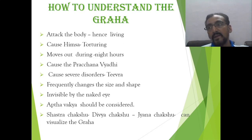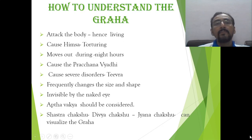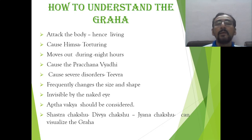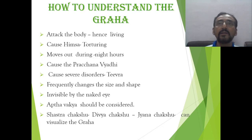Now we come to the basics of grahas which are mentioned in Kaumabhritya. If you look into the classics like Sushruta Samhita and Vagbhata especially, and to some extent in Kaushruta Samhita, graha is mentioned as 'grahanat anyanayati graha' — that means one which comes to your body, attacks you and causes the problem, and that is called graha, grahanat iti graha.